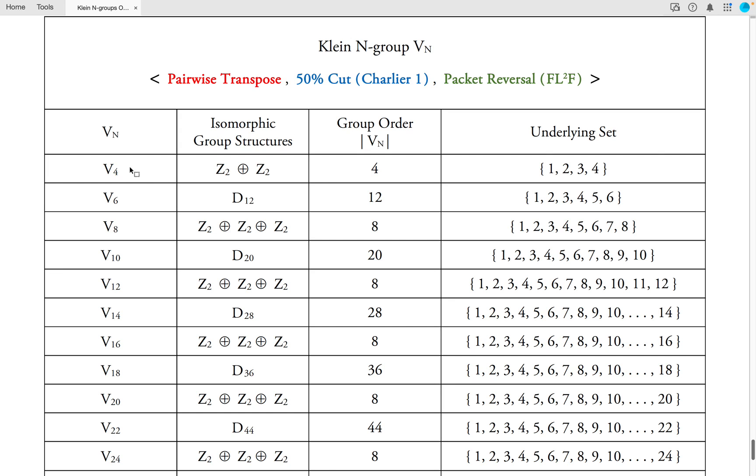Here we have the Klein 4 group, its group structure, its group order, and its underlying set of elements. V6, which is isomorphic to the dihedral group of order 12, and the underlying set is 1 through 6. Here's V8, which we've seen on this channel already. It's isomorphic to the direct sum of Z2 with itself three times, its order is 8, and its underlying set of elements is 1 through 8, and so forth.